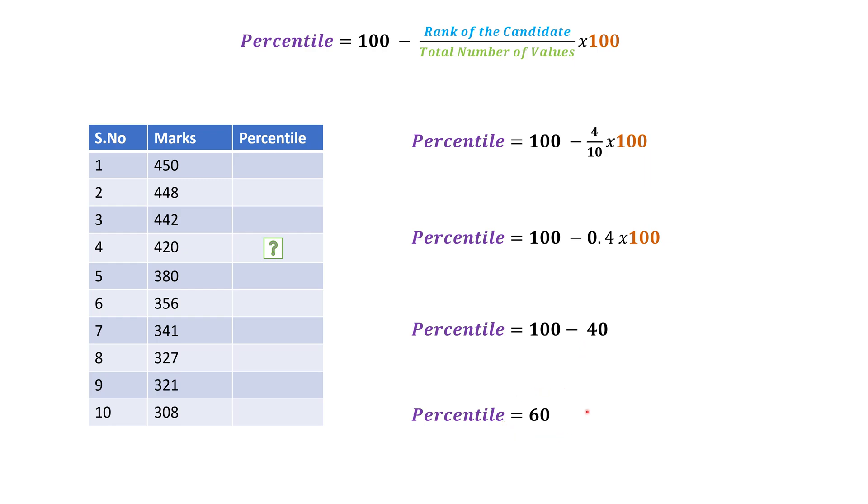The ultimate result is 60. As you see, in both types of formulas, the percentile of this particular person is 60 only. Hope you understood how the percentile is calculated.